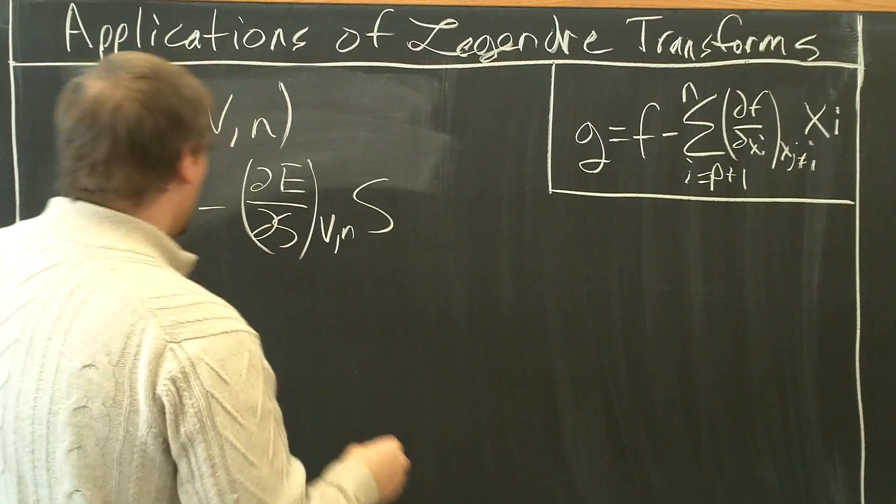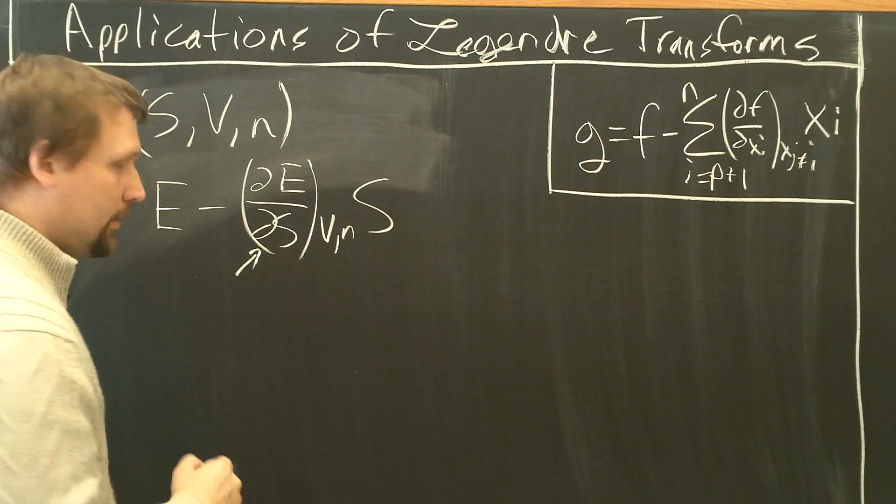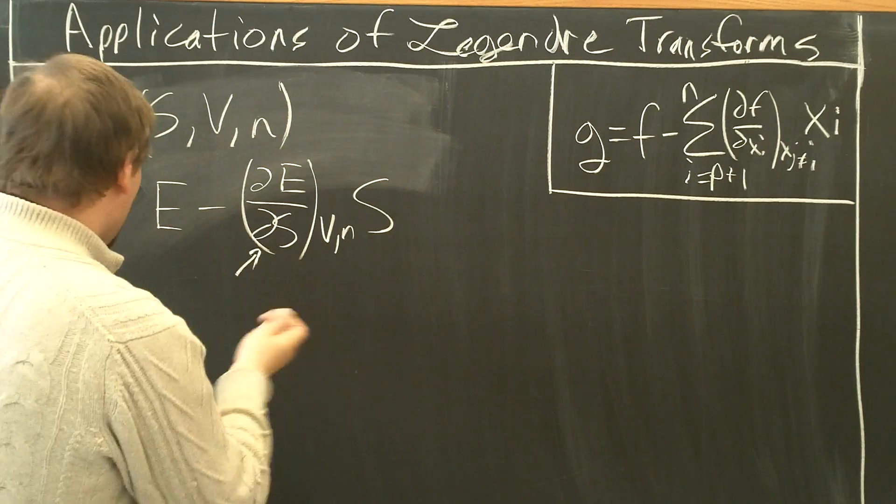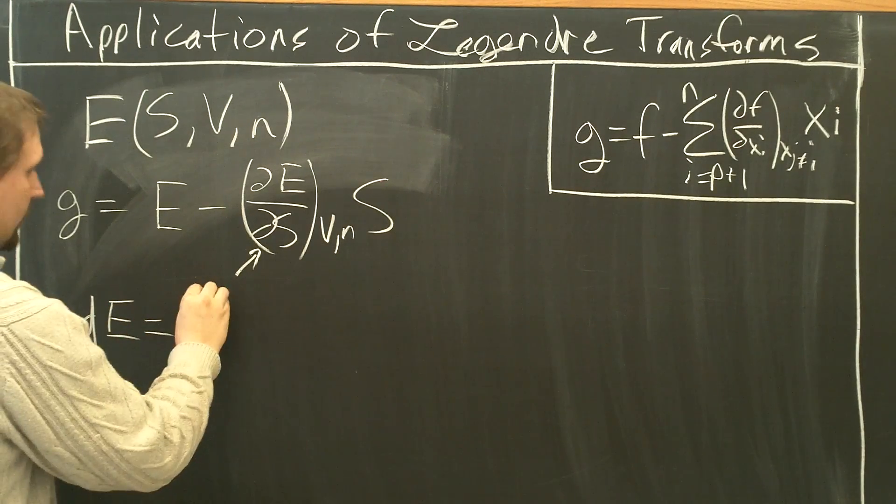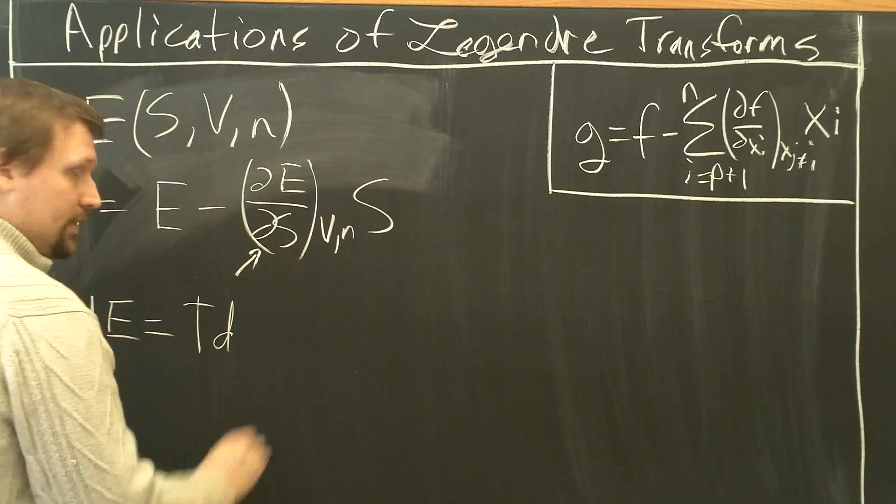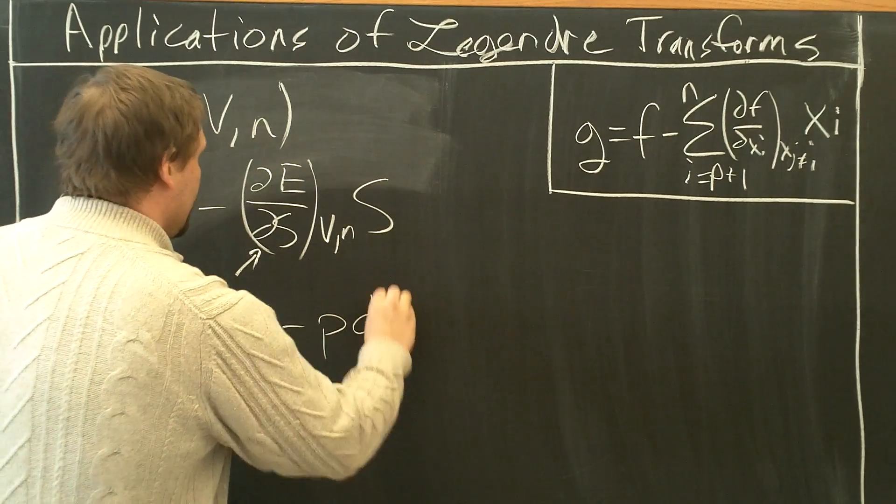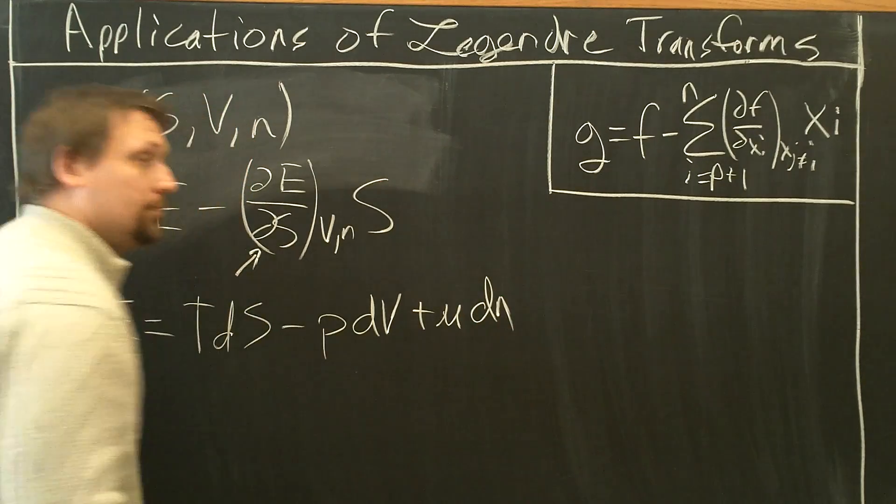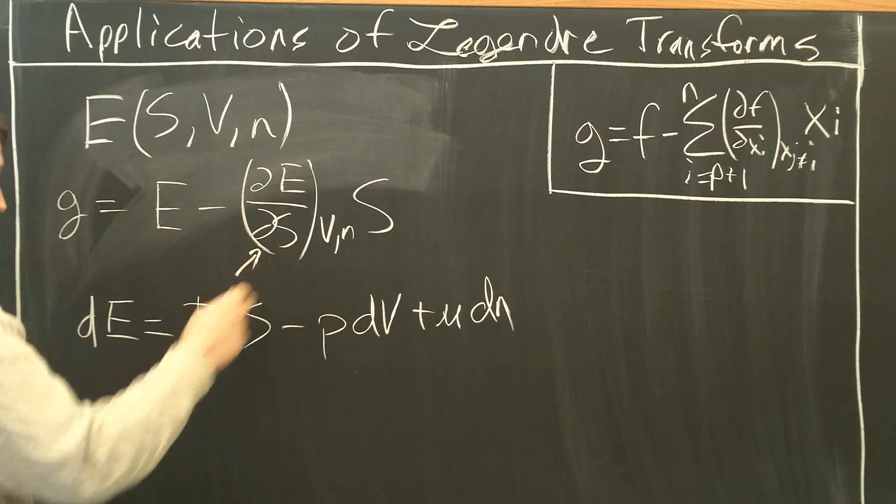Well, first we have to figure out what is partial E partial S? Well, if you don't know this already, we can write down the balance equation. dE equals TdS minus PdV plus μdN.